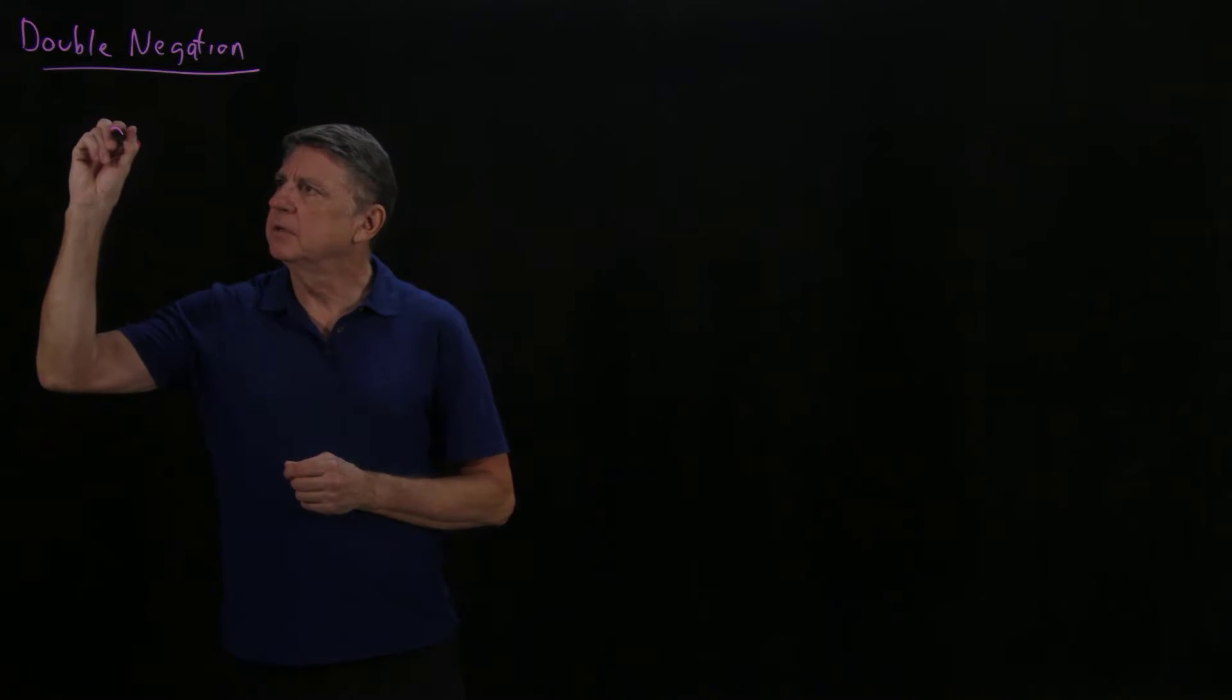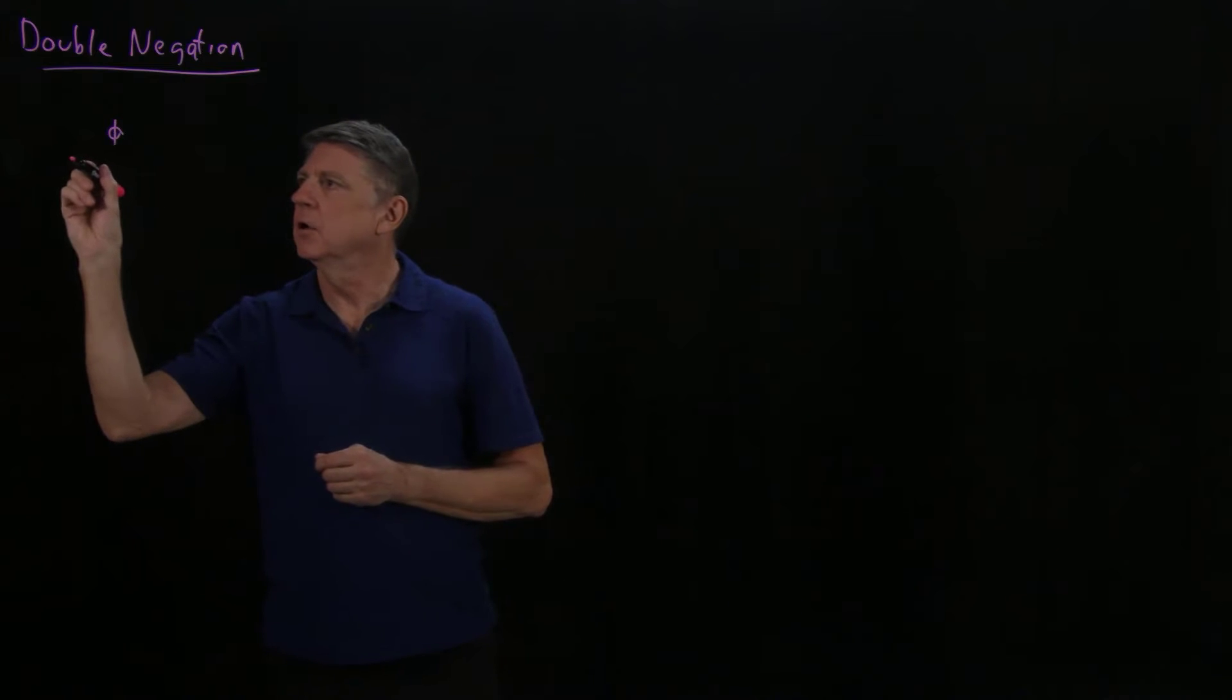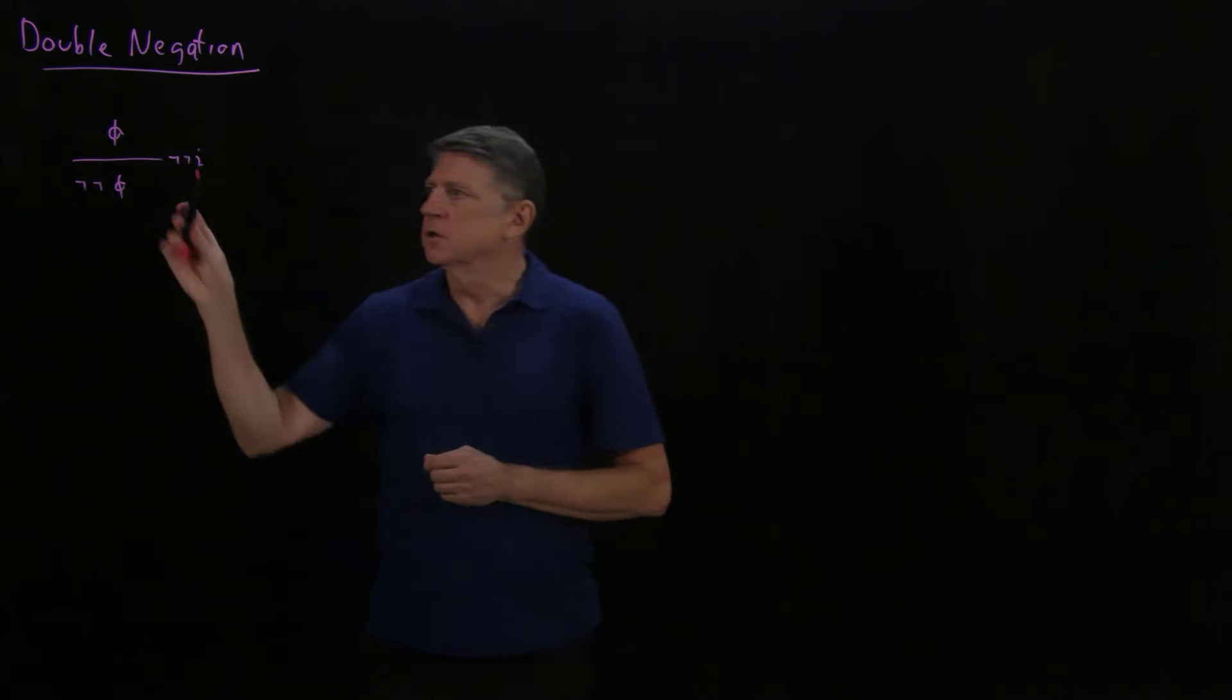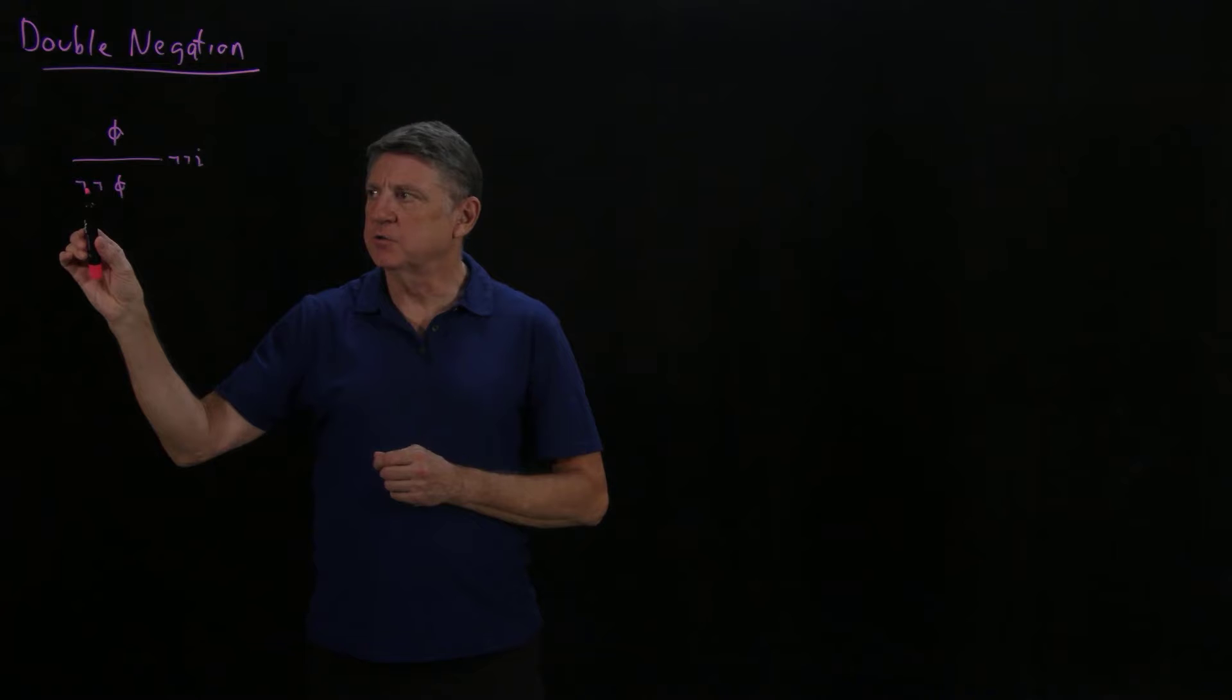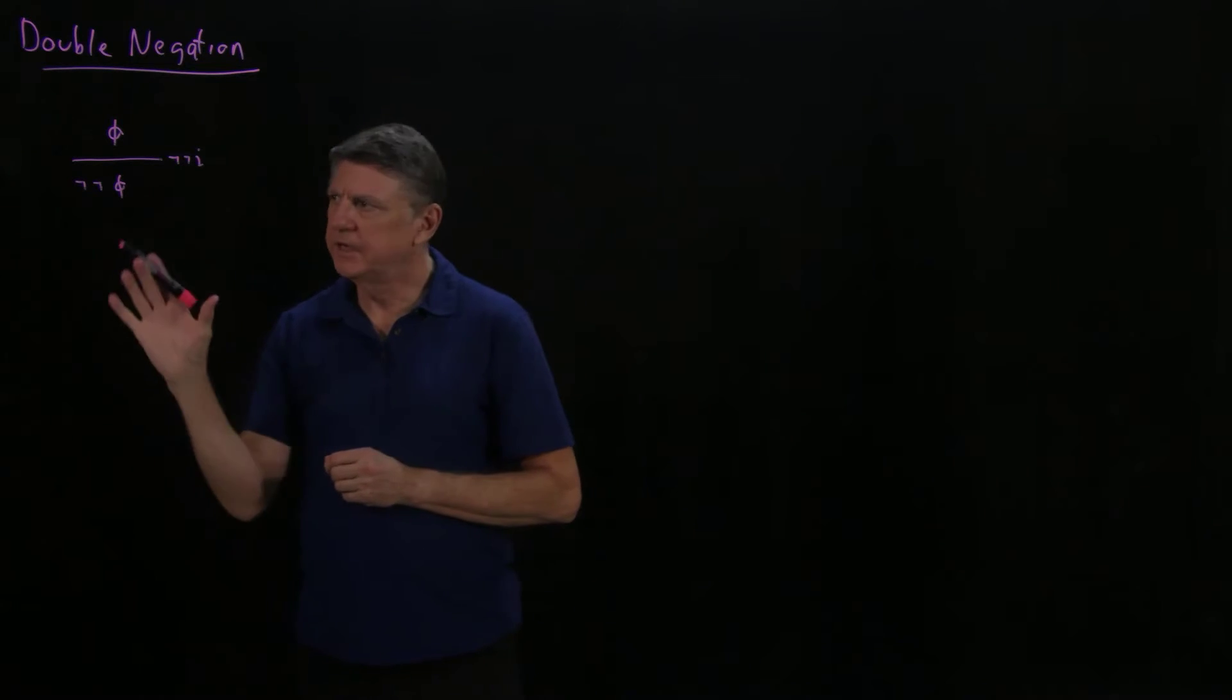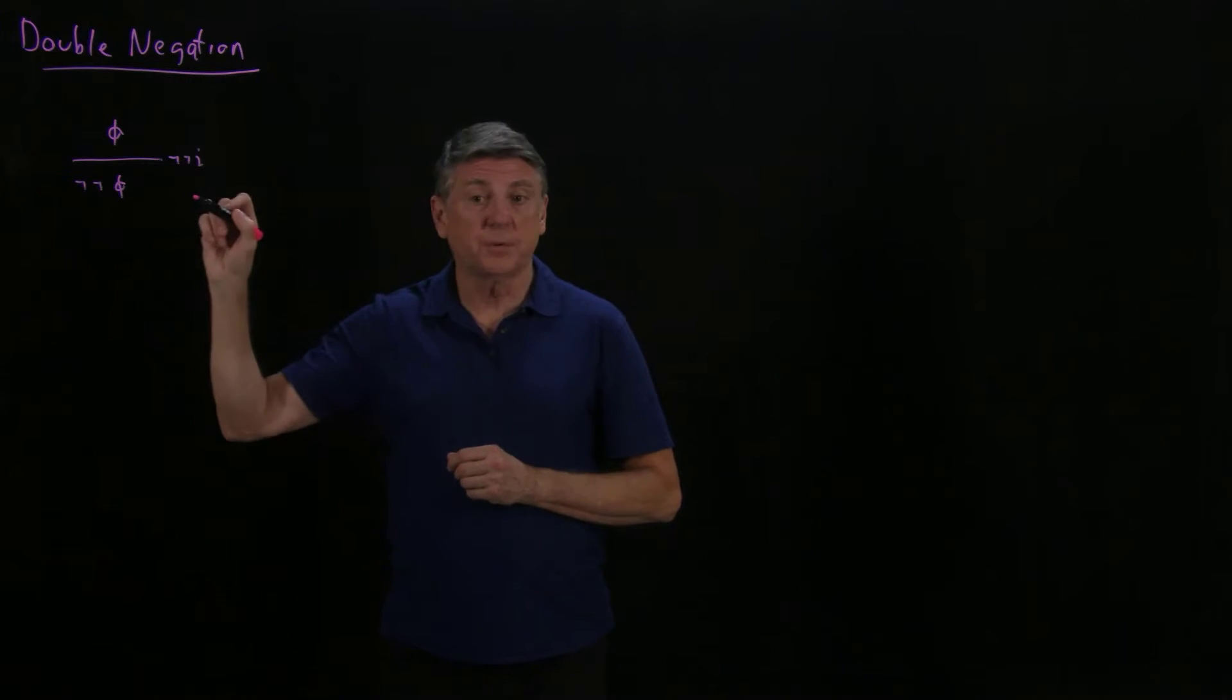The first rule regarding double negation is that if we see a formula on a line, we can conclude the double negation of that formula, and that is double negation introduction. This is the not symbol, so what we can say is it's not true that it's not the case that phi. So again, it's a little bit odd, but in symbols, it's much clearer. This one is always part of natural deduction.